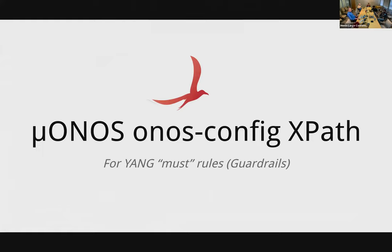Looking at future features — from an Ether perspective there's a need to have guardrails: business rules for inter-leaf interlocks. For instance, you shouldn't be able to put the bandwidth above a certain level when you've chosen a particular type of device. YANG has a feature called must rules — these must be satisfied before validation is true.